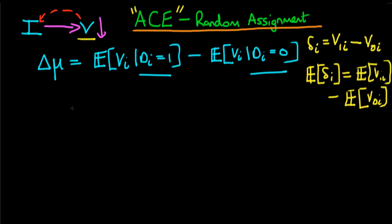We're going to see in this video how random assignment of a state to a particular group — that is, random assignment of whether a state receives infrastructure spending or not — actually allows us to evaluate the average causal effect. If I rewrite this, the first term is essentially the expected level of V1I given that DI is equal to 1, as we showed in the last video.